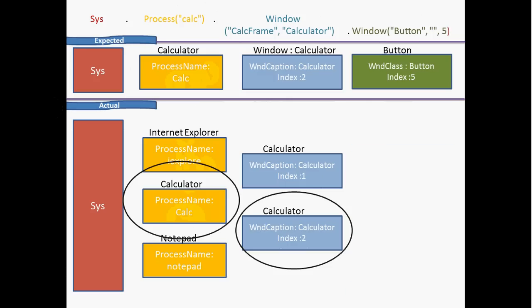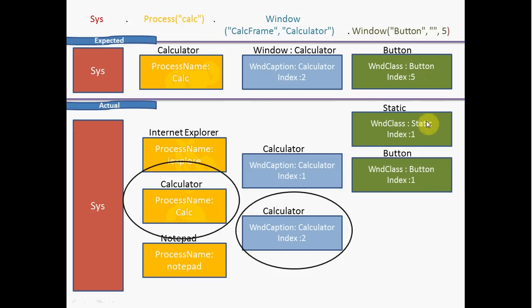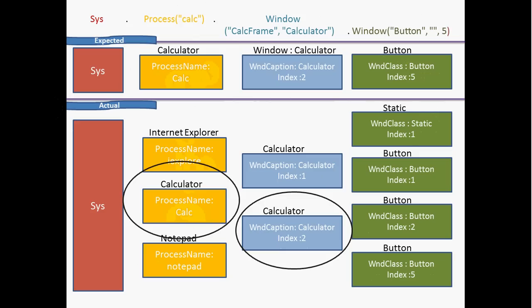TestComplete then goes to the next level — the window button with index 5. It has two properties to match. There are several objects within the calculator window: some have WndClass 'static', which doesn't match the expected 'button', so they are skipped. One object has WndClass 'button', which matches, but the index doesn't match. Another has index 2 — still not a match. Finally, it reaches the expected button where WndClass is 'button' and index is 5 — both match the expected properties.